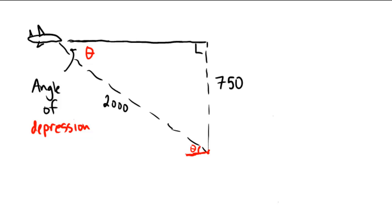So opposite side, opposite leg, and hypotenuse means this time we're going to be using a sine function. The sine of theta would be the opposite leg, which is 750, over the hypotenuse, which is 2000.